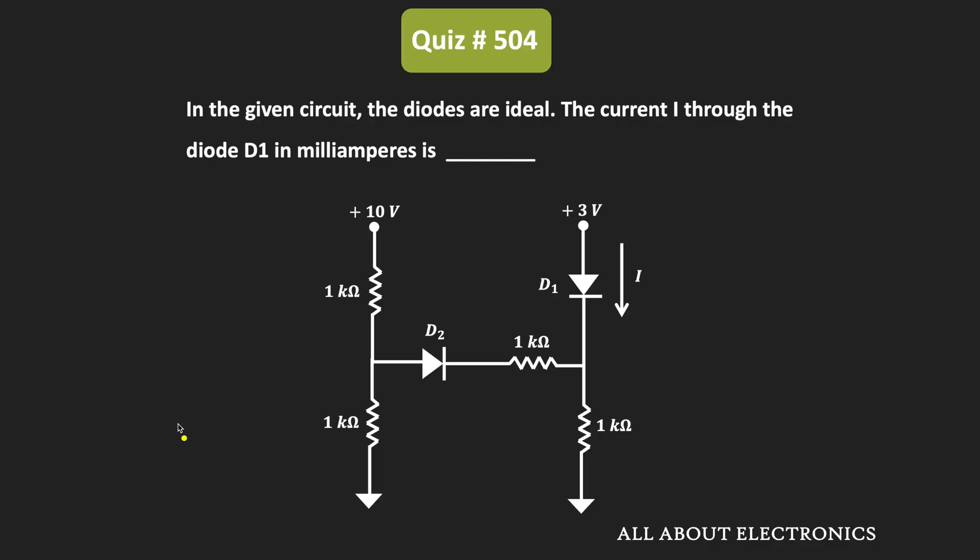Hey friends, welcome to the YouTube channel All About Electronics. In this problem, we have been given a diode-based circuit where all the diodes are ideal diodes. We have been asked to find the current through diode D1.